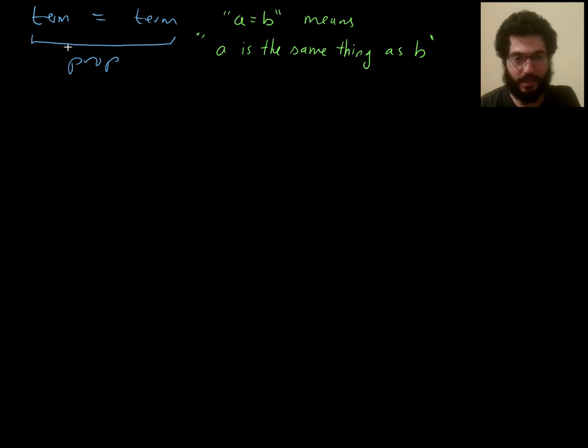This was the grammar, the syntax for equality: term, equal sign, term, and then you get a proposition, which is an assertion of equality. Semantically, what it means is when you say a equals b, that means a is the same thing as b.